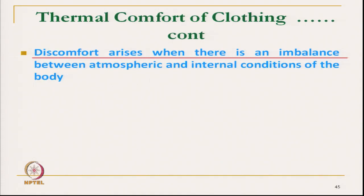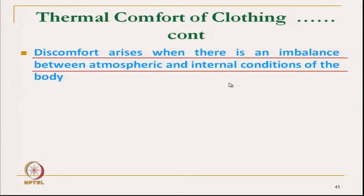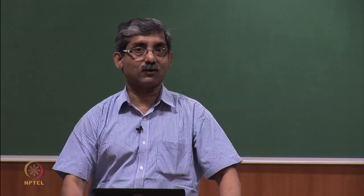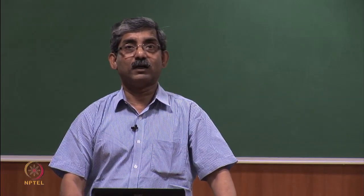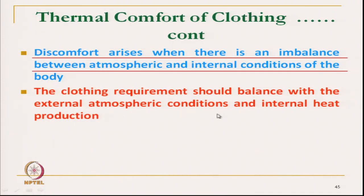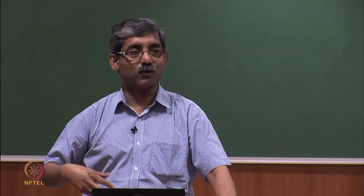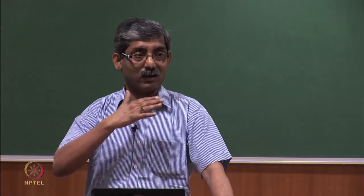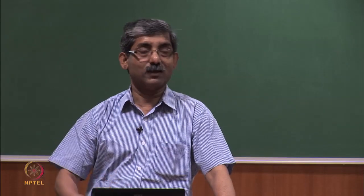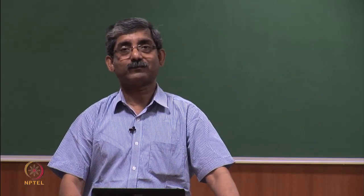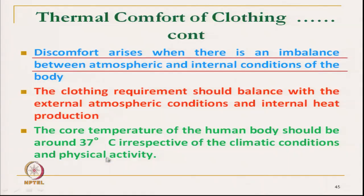We feel discomfort when there is an imbalance between the atmosphere and internal condition. There must be proper balancing of heat exchange, otherwise we feel uncomfortable. Clothing requirements should be balanced with external atmospheric conditions and internal heat production. Our body core temperature should be around 37 degrees Celsius irrespective of climatic condition or physical/physiological activities.